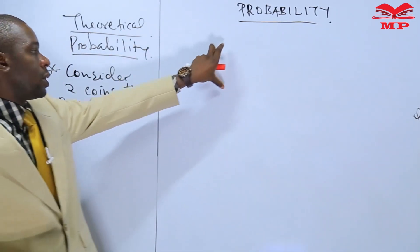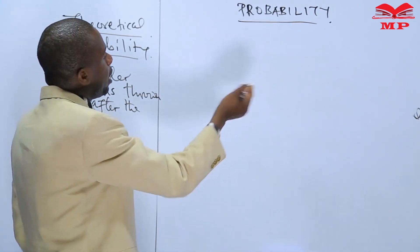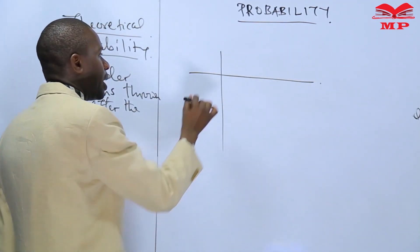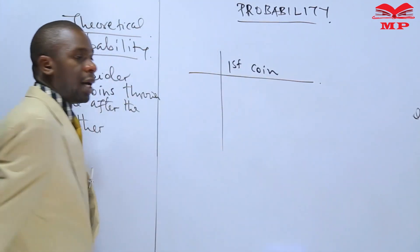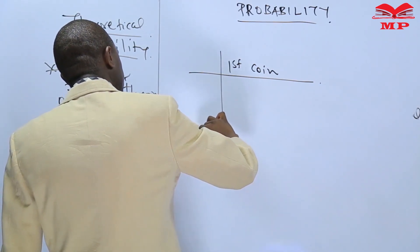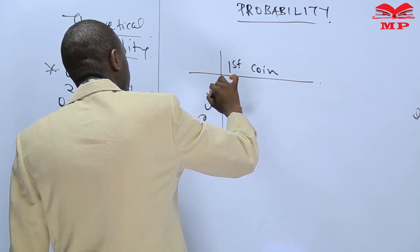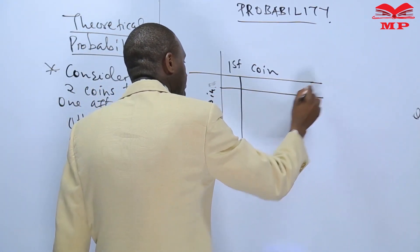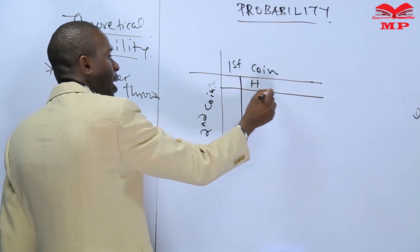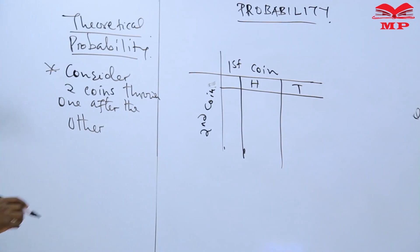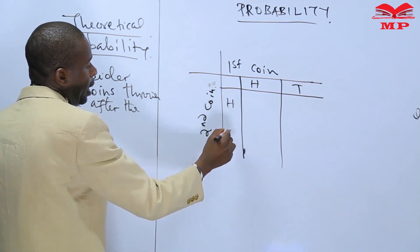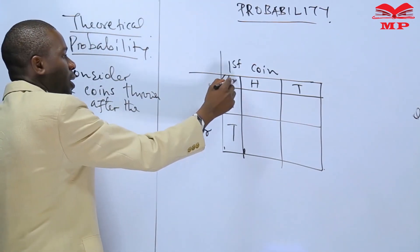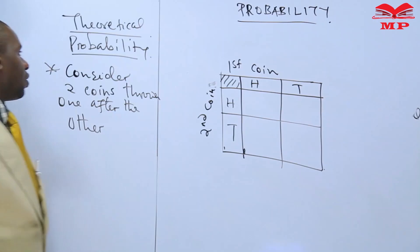We can come up with a small table. We have the first coin and the second coin. For the first coin we expect a head and also a tail, and for the second coin we also expect a head and also a tail.